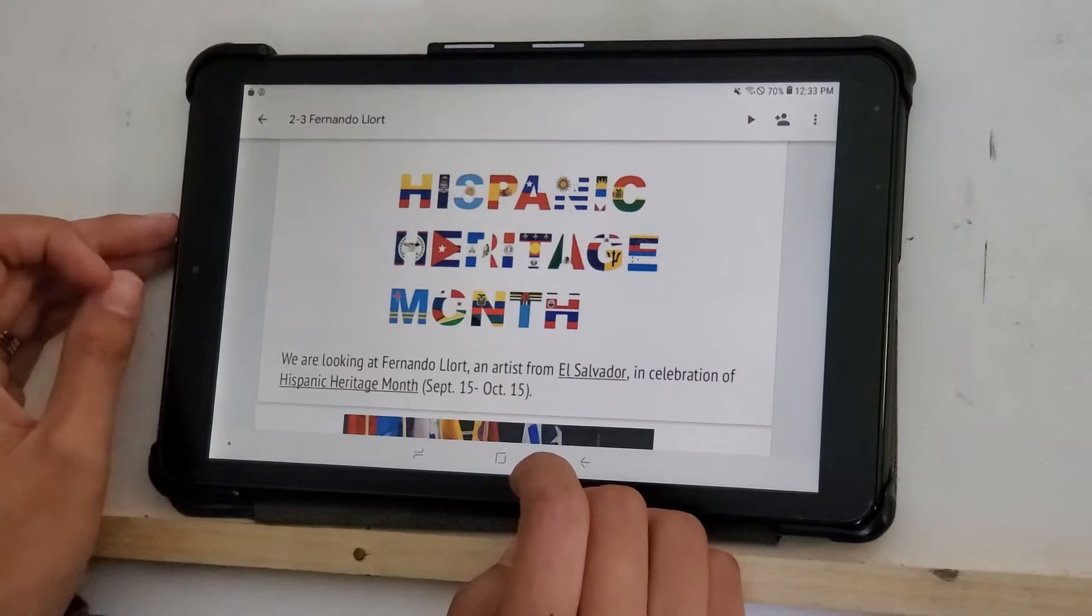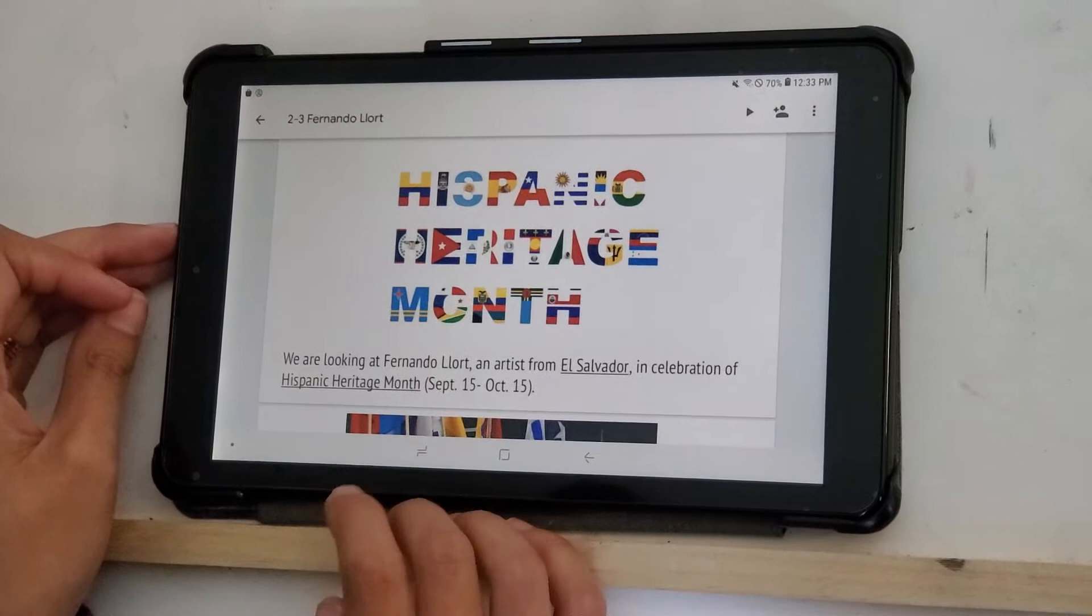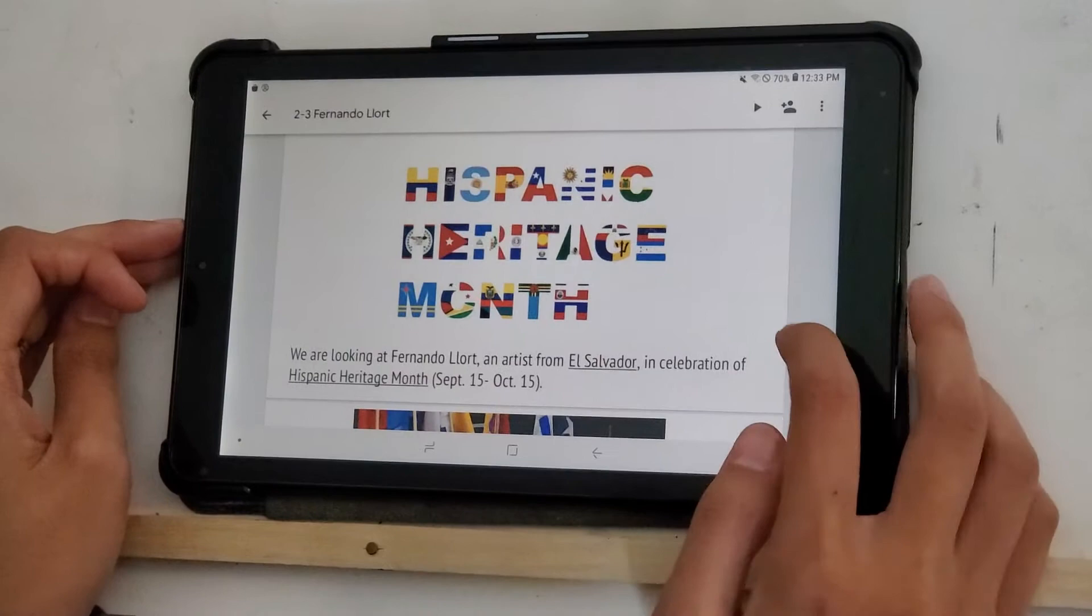And so we are looking at Fernando Yort, who, like I said, is an artist from El Salvador, in celebration of Hispanic Heritage Month. And that goes from September 15th all the way until October 15th. So we are right in the middle of it right now.